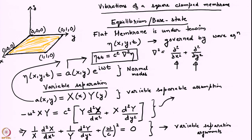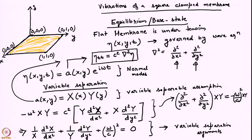This equation has the structure of an eigenvalue problem. It can be written as: the Laplacian of XY equals lambda times XY, where the operator is our familiar Laplacian operator. So grad-squared of A equals lambda times A, where lambda is basically minus omega-squared by c-squared.